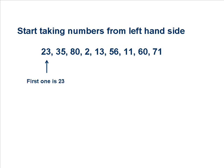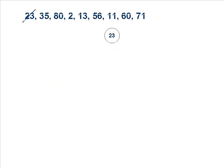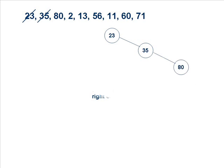Start taking numbers from the left hand side of the list and start creating the binary search tree. First, we take 23 and create a root node with the value 23. We take the next value, 35, and compare it with 23. Since 35 is larger than 23, we place it on the right hand side of 23.